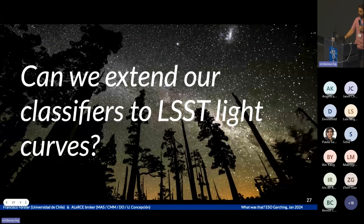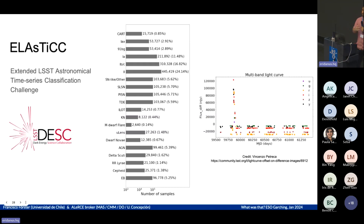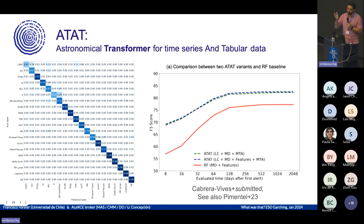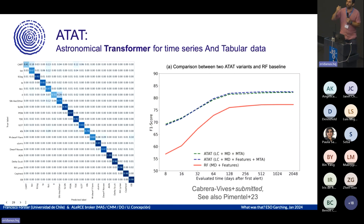Can we extend our classifiers to LSST light curves? Yes — we have been taking part in the ELAsTiCC challenge. We show a simulated LSST light curve and the confusion matrix on the training set. Interestingly, after many years trying different classifiers, we always found that random forest was the best. But for the first time, we beat random forest with transformers — the technology behind ChatGPT. Recurrent neural networks could not beat random forest, but transformers can. That's the key message.